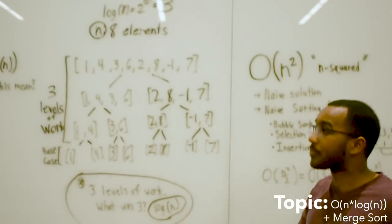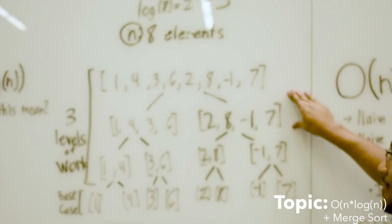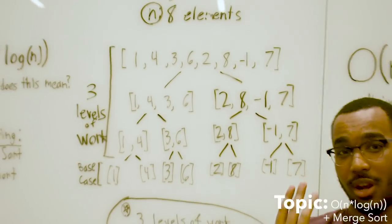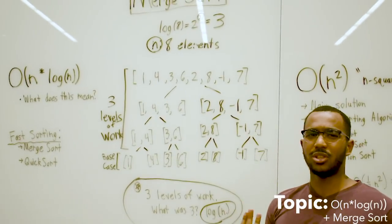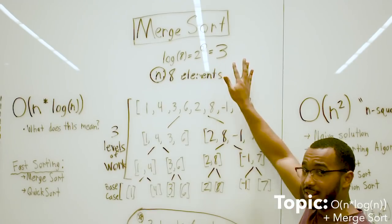This is basically how merge sort works. It's going to take our unsorted input, have it each time. What we notice here is we have 3 levels of work. This 3 looks familiar. We literally just got this 3 up here. That is not a coincidence.